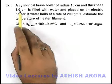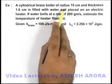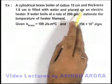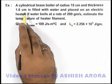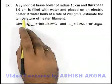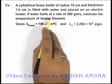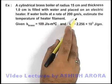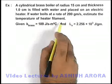In this example we are given that a cylindrical brass boiler of radius 15 centimeter and thickness 1 centimeter is filled with water and placed on an electric heater. If water boils at a rate of 200 gram per second, we are required to estimate the temperature of heater filament.